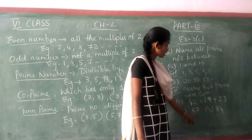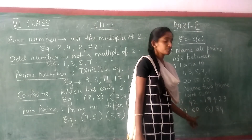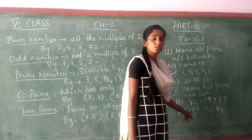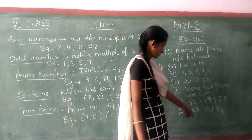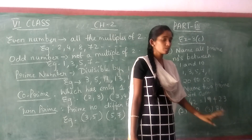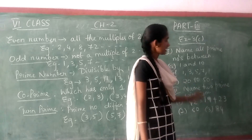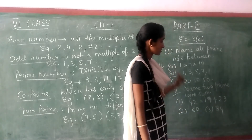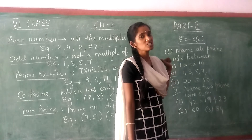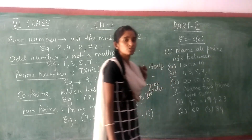I have given you 2 more questions. One is 60 and one is 80. You should add any 2 prime numbers and get 60, and you should add any 2 prime numbers and get 80. Make sure you are completing this exercise.